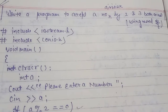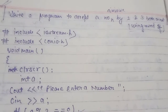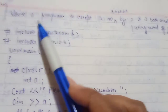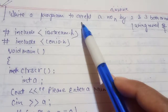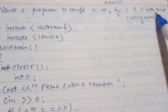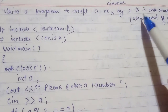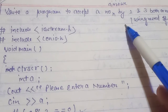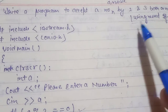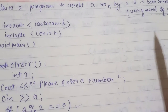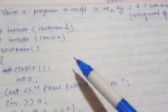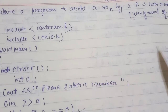Hello friends, today we will discuss a program based on the divisibility rule. The program is: write a program to accept a number and check if it is divisible by both 2 and 3. We are going to check this using nested if conditions, which is a very important concept in this program.